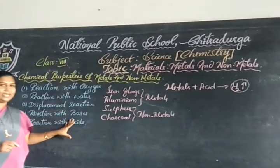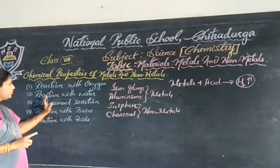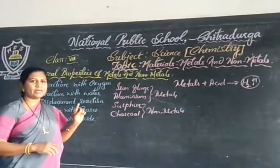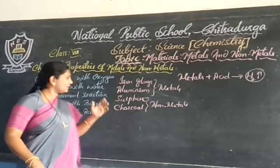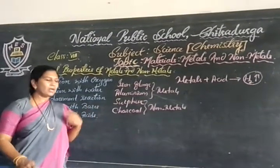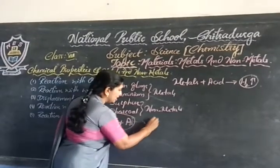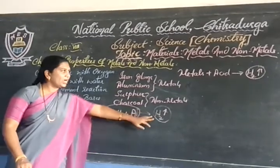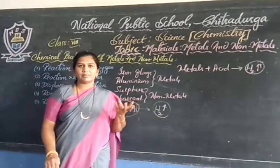Dear students, we have now observed and studied in detail the chemical properties of metals and non-metals. Reaction with oxygen — only metals react with oxygen, non-metals are non-reactive. Reaction with water, that is the rusting of iron. Displacement reaction — when we take copper sulphate and drop iron into it, it forms ferrous sulphate and displaces the copper. Reaction with bases — if we take sodium hydroxide and drop aluminium foil into it, hydrogen gas is also released, indicating that when bases react with metals, hydrogen gas is released. Reaction with acids — just now you observed that whenever metals react with acid, it results in the liberation of hydrogen gas.